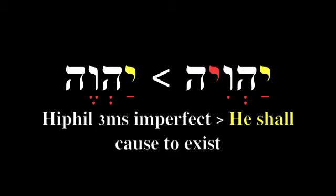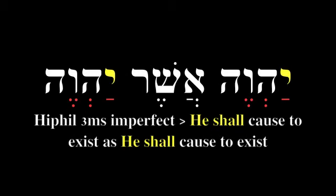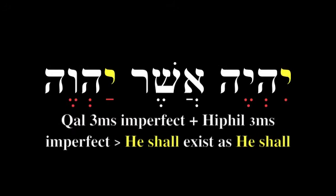As it relates to the Tetragrammaton — the yod-he-waw-he — it is a conjugation of the verb 'to be' in the third person imperfect, but the conjugation reflects a different type of function: it is a causative conjugation from the hifil binyan, meaning 'he shall cause to exist.' This is fundamentally different from 'he shall exist.' So yahweh asher yahweh means 'he shall cause to exist as he shall cause to exist,' or 'it shall cause to exist as it exists.'